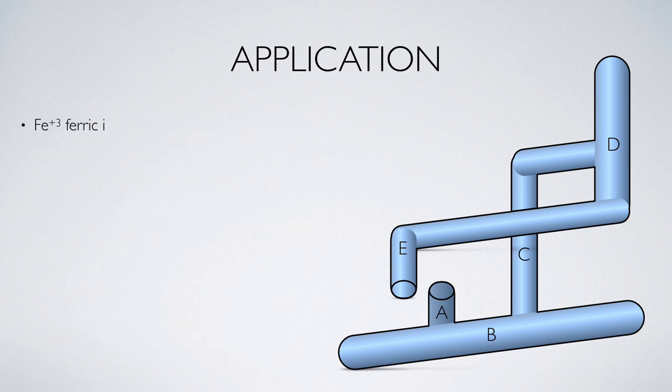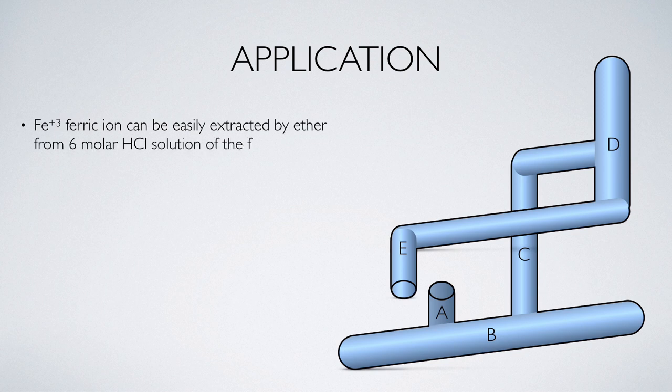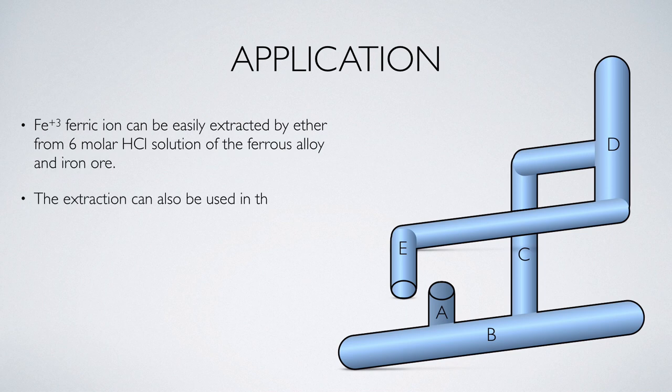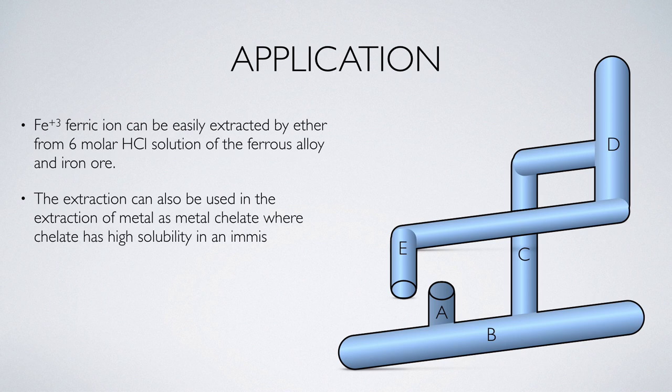Iron plus 3 ferric ion can be easily extracted by ether from 6 molar HCl solution of the ferrous alloy or iron ore. The method can also be used in the extraction of metal as metal chelates where chelates has high solubility in immiscible solvents such as chloroform and benzene.